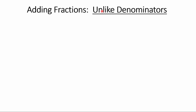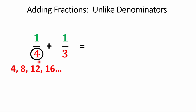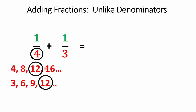Now what if the denominators are unlike? What if they're like one-fourth and one-third? We want to turn it into a question with like denominators. Here's what I like to do: look at the bigger number — the four — and list its multiples. Then take the smaller number and start listing its multiples until you get a matching number. Snap your fingers when you get a match. I stop at 12 because I've got a 12 and a 12. That means you turn both fractions into twelfths.